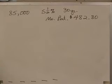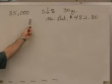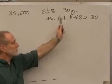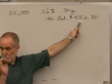Now, let's get started on an amortization schedule for this house we just bought. If we borrow $85,000 at 5.5% for 30 years, notice we found we had a monthly payment of $482.80.